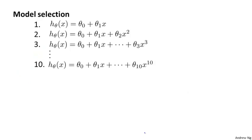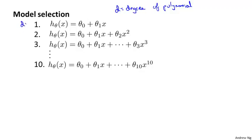Now let's consider the model selection problem. Let's say you're trying to choose what degree polynomial to fit to data — a linear function, a quadratic function, a cubic function, all the way up to a tenth order polynomial. It's as if there's one extra parameter d, which represents what degree of polynomial to pick, ranging from d equals one up to d equals ten.